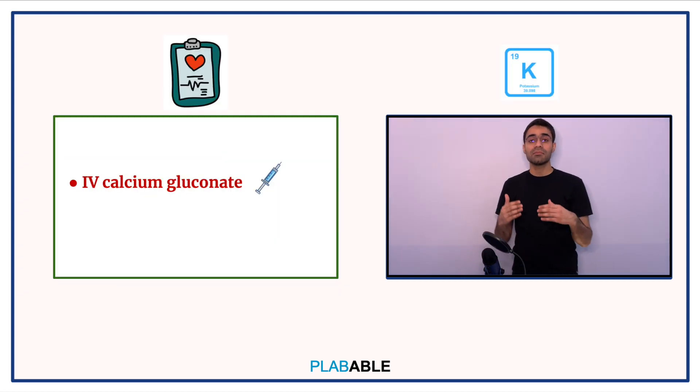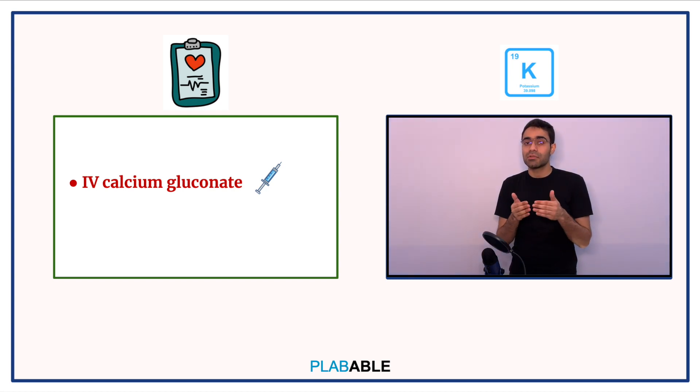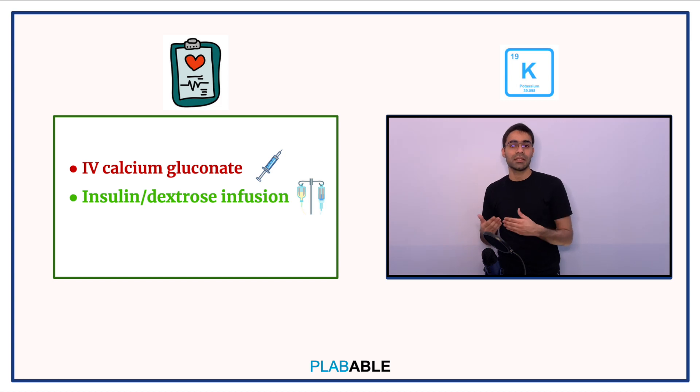The initial management involves stabilization of cardiac membrane with IV calcium salts like IV calcium gluconate because this patient is at an increased risk of ventricular arrhythmia. But this does not lower the potassium levels, so for that we give IV insulin followed by dextrose.